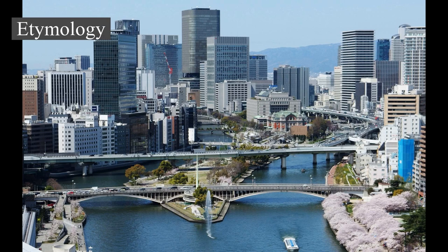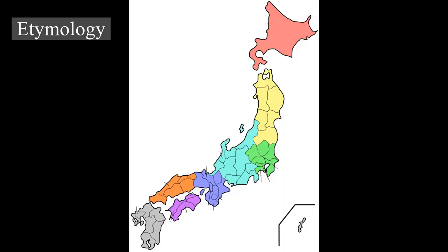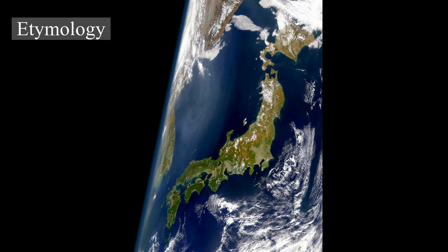The name for Japan in Japanese is written using kanji and is pronounced Nippon or Nihon. Before this kanji was adopted in the early 8th century, the country was known in China as Wa. Nippon, the original Sino-Japanese reading of the characters, is favored for official uses, including on bank notes and postage stamps. Nihon is typically used in everyday speech and reflects shifts in Japanese phonology during the Edo period. The characters mean 'sun origin,' which is the source of the popular western epithet 'land of the rising sun.' The name Japan is based on the Chinese pronunciation of those characters and was introduced to European languages through early trade.